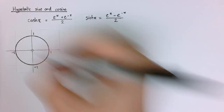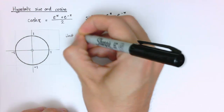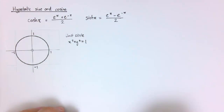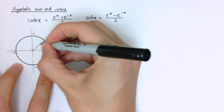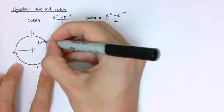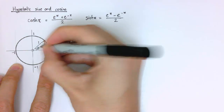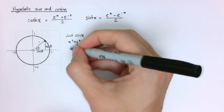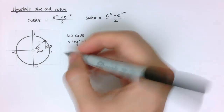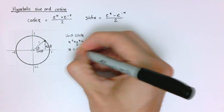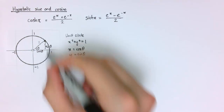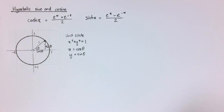The unit circle is x squared plus y squared equals 1. These relate to sine and cosine because if I take a point on the unit circle — this is 1 — and we've got for a particular angle theta, we've got cos theta and sine theta. So this unit circle is parametrized by x equals cos theta and y equals sine theta for different values of theta, giving us different points on the unit circle.